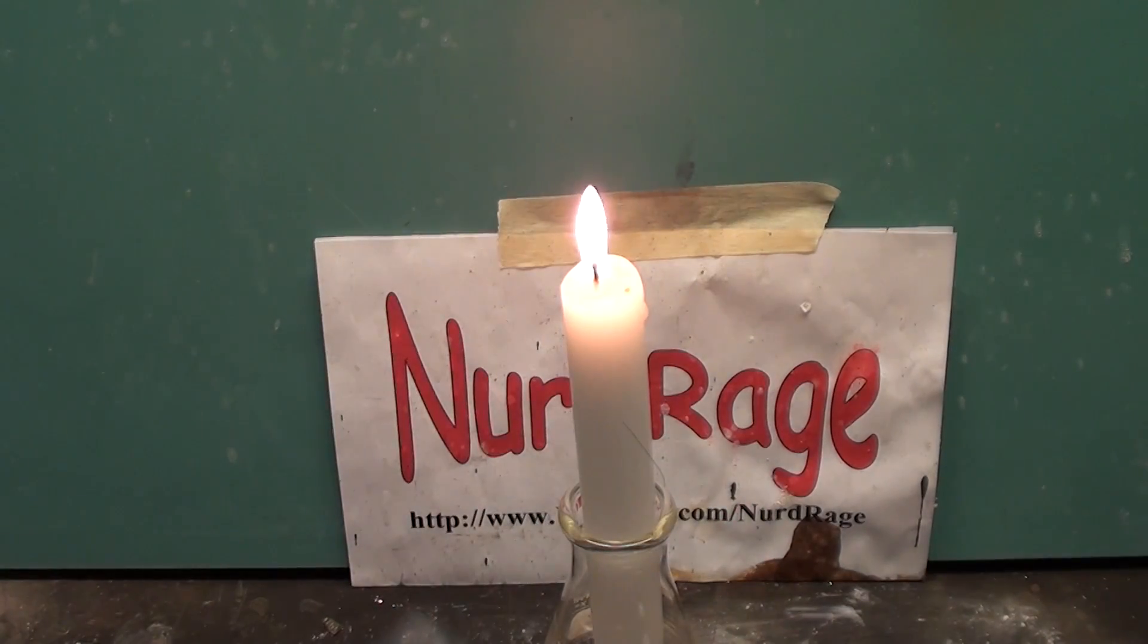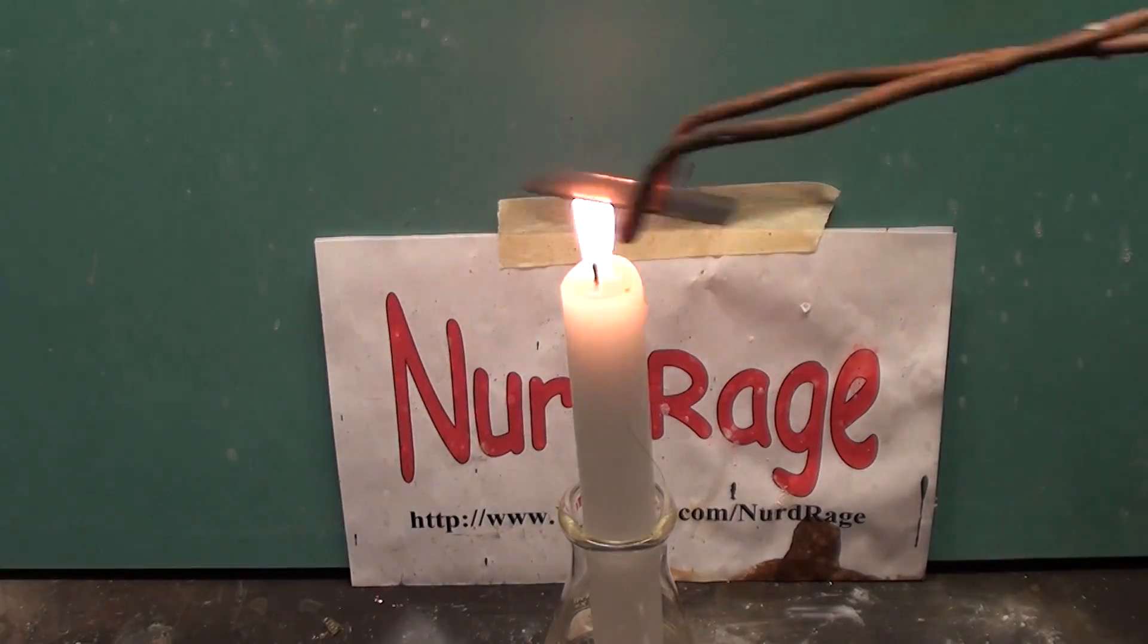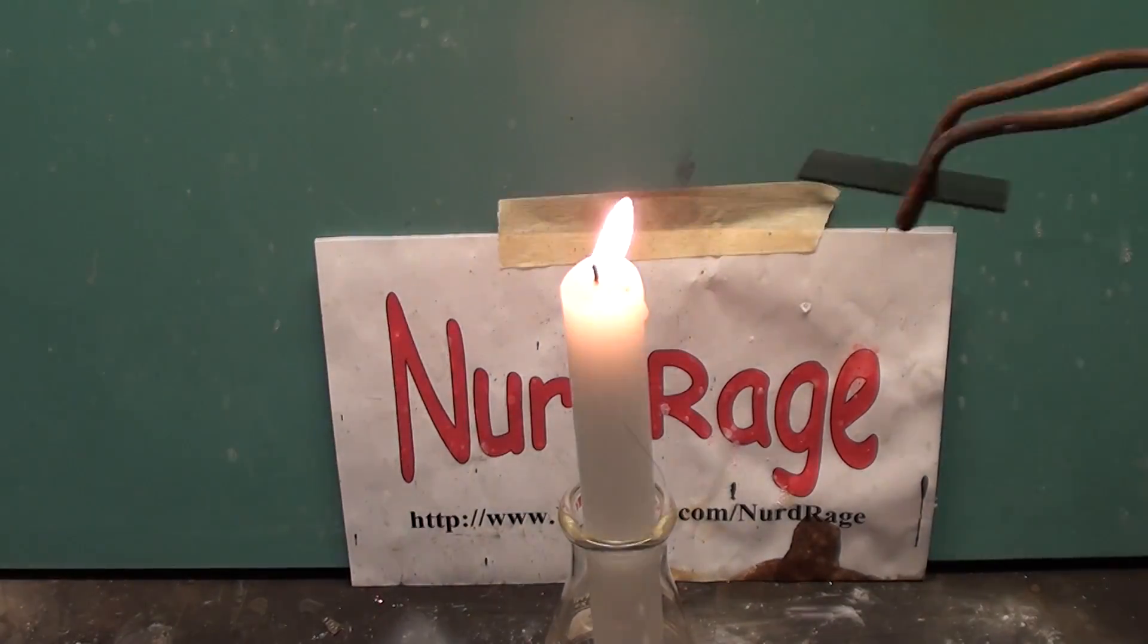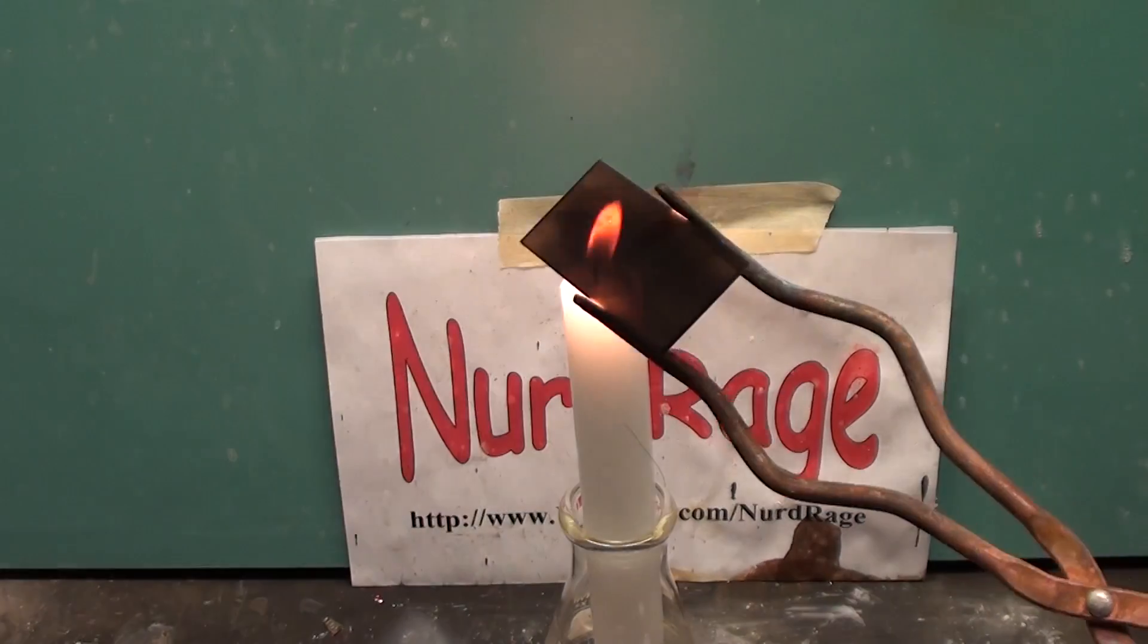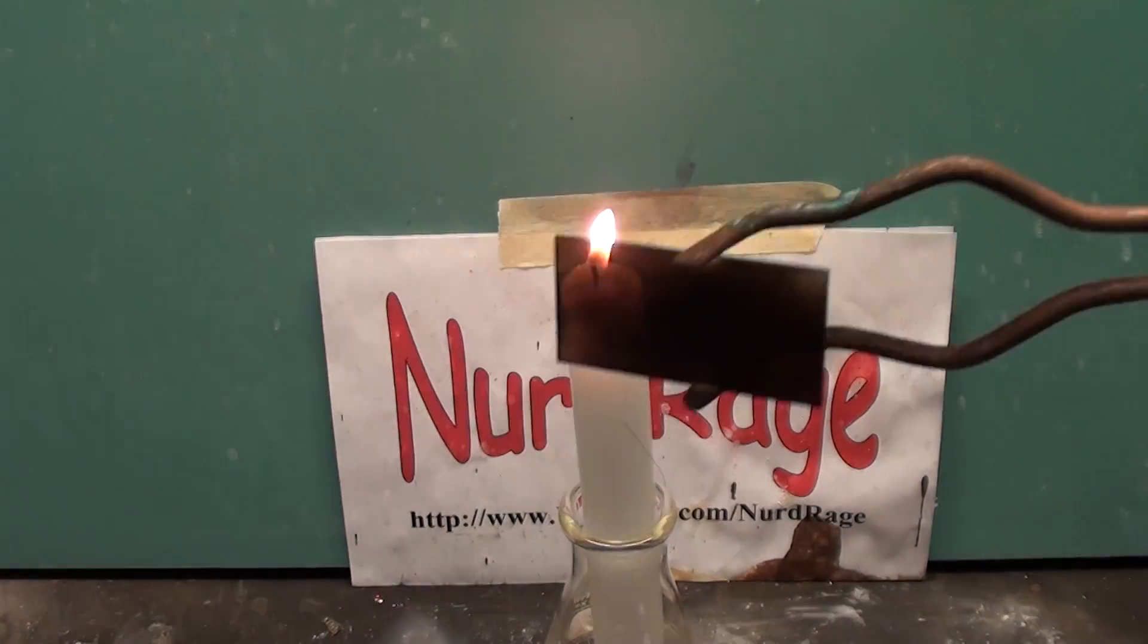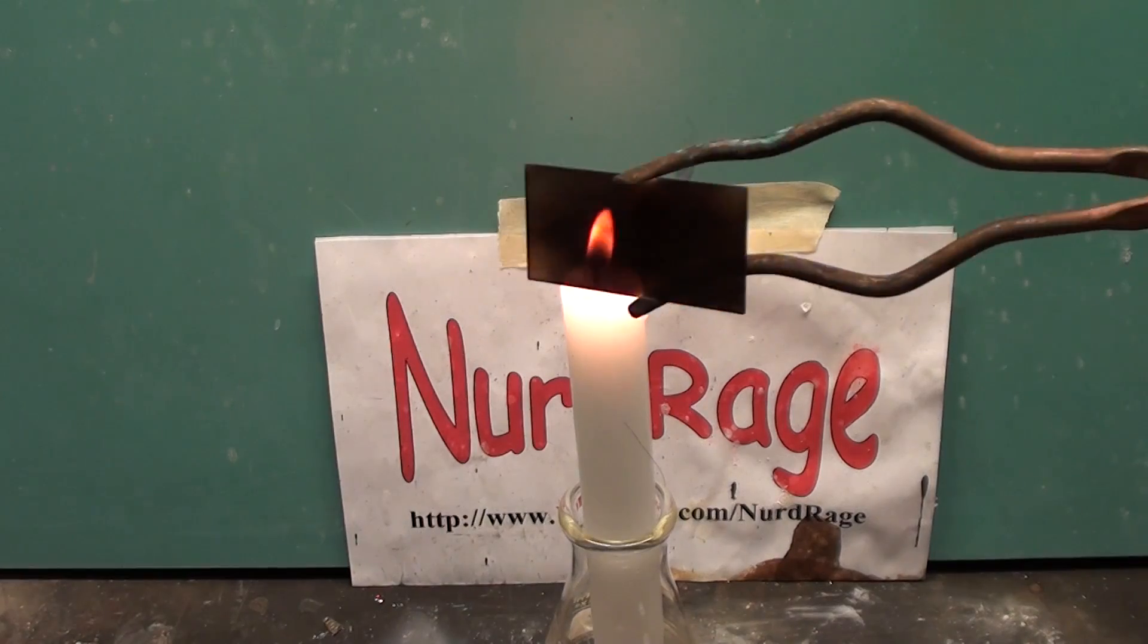Now we need to prepare the back contact. Get a lit candle and pass the conductive side of another piece of indium tin oxide glass through it several times. The idea is that we want to build up a layer of soot. There we are. It doesn't need to be too thick.